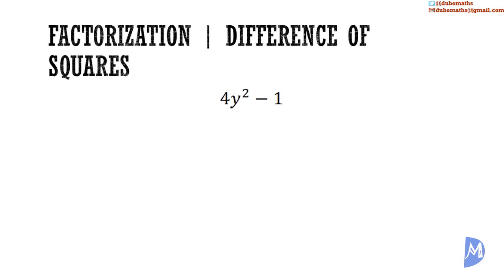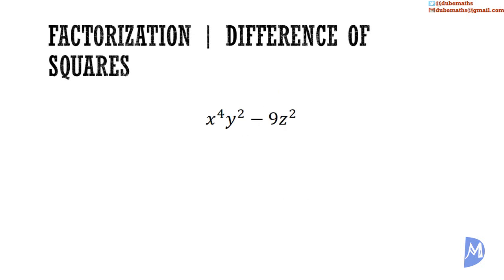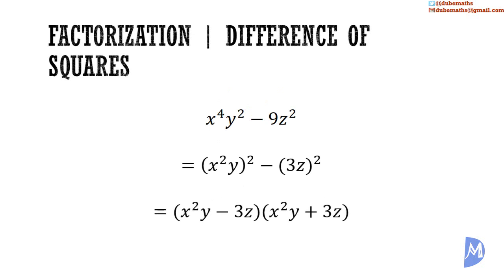And 4y squared minus 1, which is 2y squared minus 1 squared, is equal to 2y minus 1, multiplied by 2y plus 1. And x to the 4th power y squared minus 9z squared, which is the same as x squared y, squared, minus 3z, squared, is equal to x squared y minus 3z, multiplied by x squared y plus 3z.